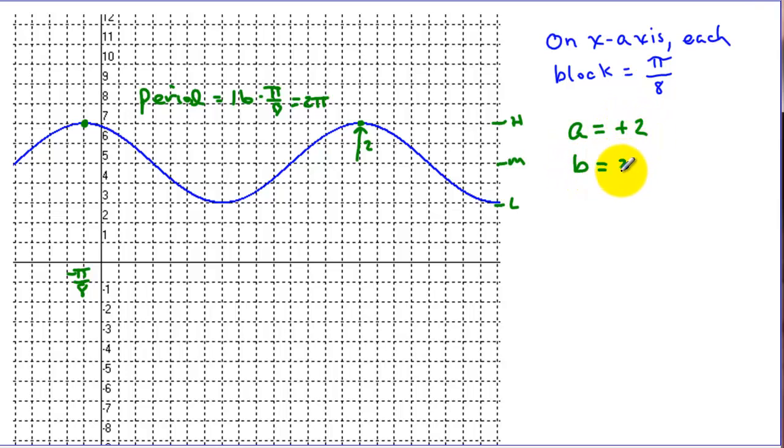b is 2π divided by the period, which was 2π, which is 1. d, we're still, our midline is still up 5, so we're 5. And c is b times our start value, negative π over 8.